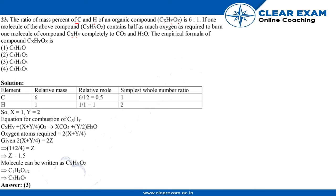So we have been given that the ratio of C and H is 6:1. Therefore, the simplest whole number will be 1:2. So X will be 1 and Y equals 2.